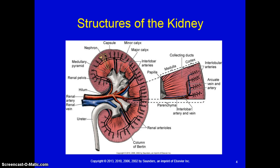The kidneys have a rich blood supply and receive 20 to 25 percent of total cardiac output, with blood flow varying from 600 to 1,300 milliliters per minute. Venous blood from the kidney starts with capillaries surrounding each nephron, and the capillaries drain into progressively larger veins, with blood eventually being returned to the inferior vena cava through the renal vein.